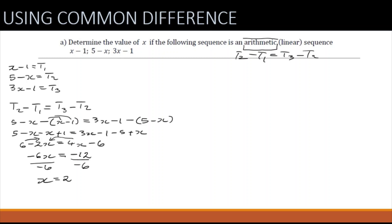Sometimes they want you to find the first three terms. With x = 2: t1 = x − 1 = 2 − 1 = 1; t2 = 5 − x = 5 − 2 = 3; t3 = 3×2 − 1 = 5. That's how we solve for unknown variables in an arithmetic sequence.